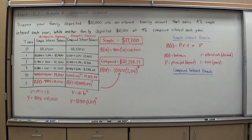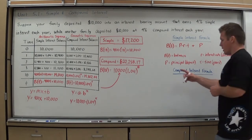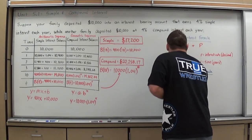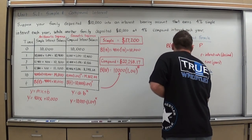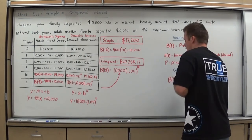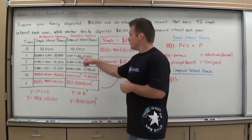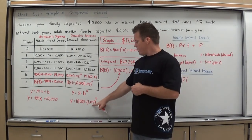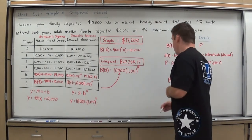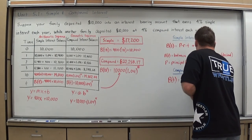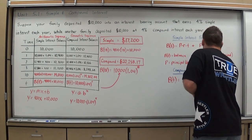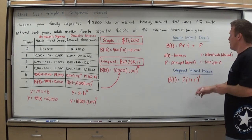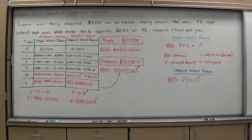And this will be the same for the compound interest form I'm about to write. Compound interest form, based on what we had, was B(t) equals, again, our original deposit, so our principal P, times parentheses. Our rate was .04, but it got added to a 1. So I'm going to say 1 plus our rate raised to the T power. And again, B(t) is the balance. P is the principal. R is the interest rate. And T is the time.